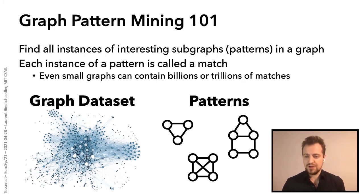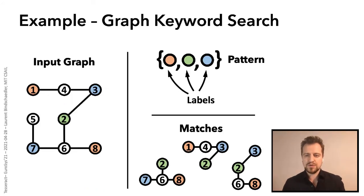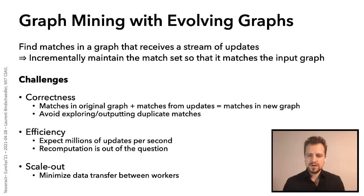Another thing is that graph mining applications are generally more CPU intensive. So here's an example of a graph mining application called graph keyword search. Our goal here is to find all minimal subgraphs connecting a set of labels of interest that are attached to the vertices of the graph. Here, we represent the labels using colors. So in this example, you can see on the bottom right that there are three matches for the particular pattern in the graph.